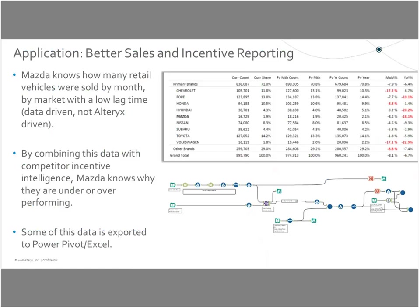Mazda wanted to know how many retail vehicles were sold by month by market. They combined that data with data on what competitors were spending on incentives, giving them a clearer view of what happened one to two months ago. Before this, there were a lot of anecdotes — so-and-so said a dealer had a bad month because of weather, or really sold a lot because of some reason. But no one could back up the real reason. Now with these technologies, Mazda could look carefully at what happened in specific markets and what actions competitors took to drive outcomes.